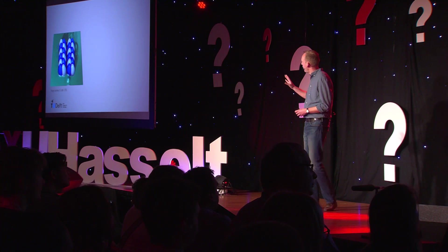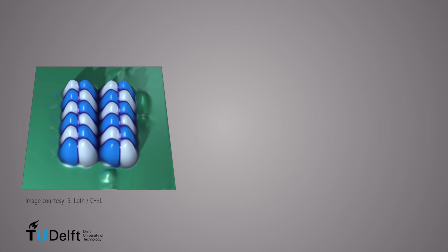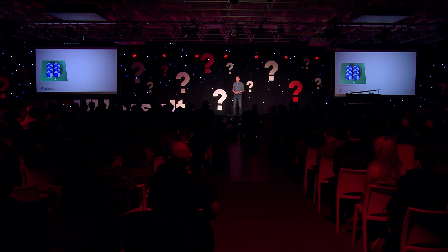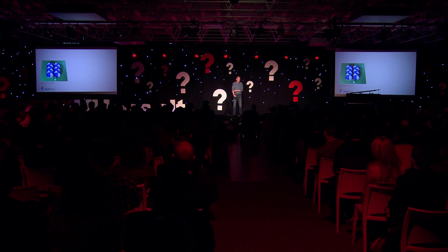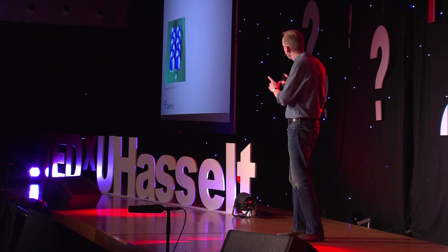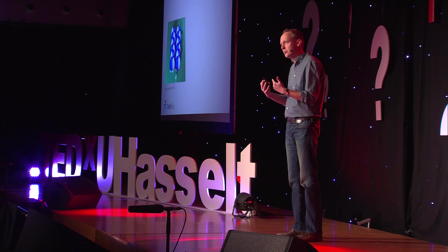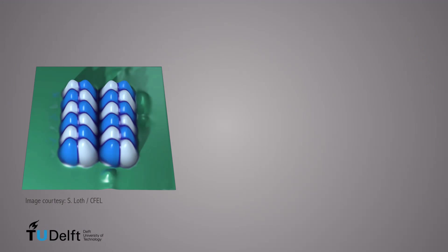Another material property that can be modified this way is magnetism. On this slide, you see two structures built out of 12 iron atoms each. Iron atoms are magnetic — each white atom has its magnetic north pole pointing up, and each blue atom has its pointing down. These atoms form what we call an anti-ferromagnet, where the magnetization direction alternates up, down, up, down. This is surprising because iron atoms in nature behave quite differently: in a lump of iron, all the north poles point in the same direction — we call that ferromagnetism. So through atom manipulation, you can design atoms that would normally form a ferromagnet to actually form an anti-ferromagnet instead.